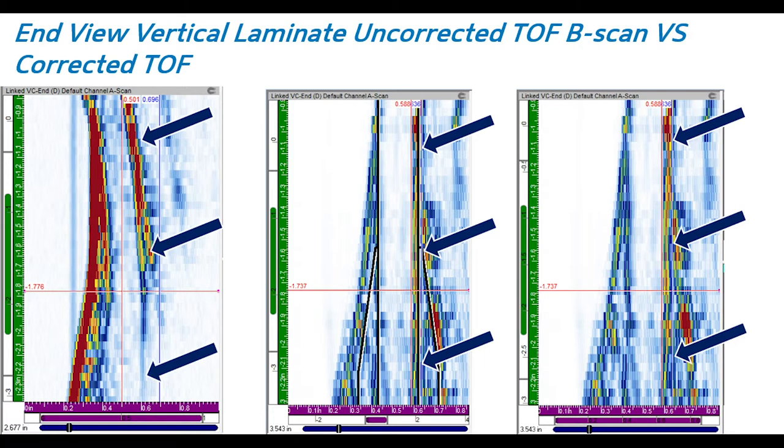The middle section shows the overlay onto the corrected time of flight data, and then the image to the right is the same data but without the overlay shown on it. You can get a nice image and see clearly where we are gating that bond line interface at. We can get a nice tight gated echo, a gated response off of that to get very good results of the bond line amplitude.